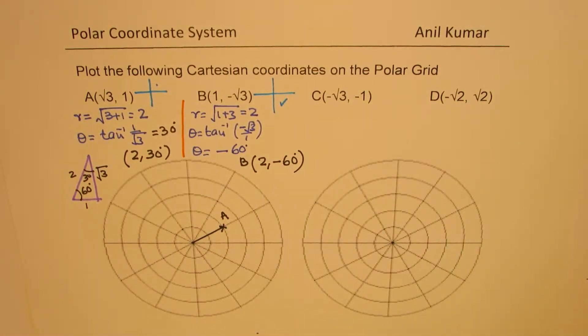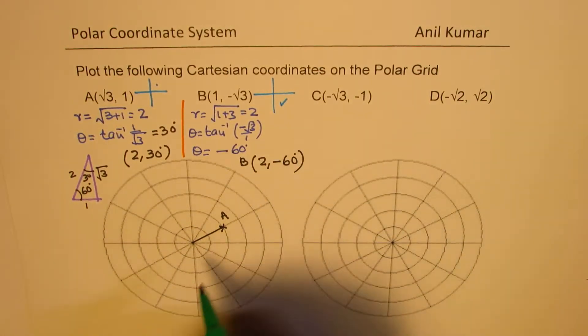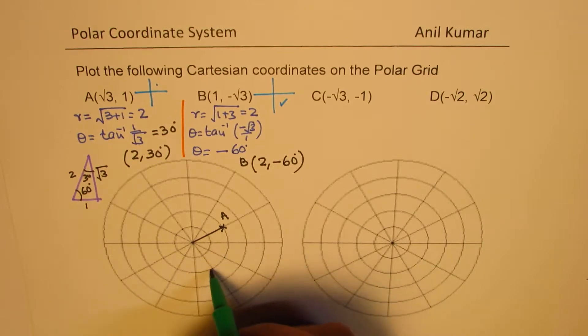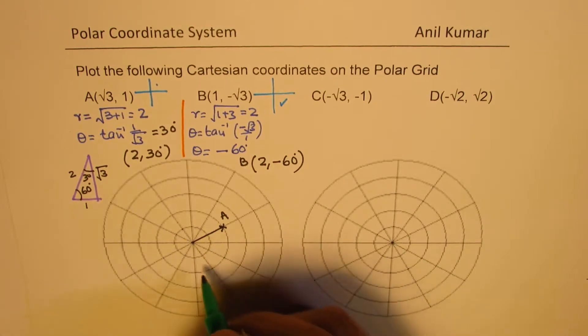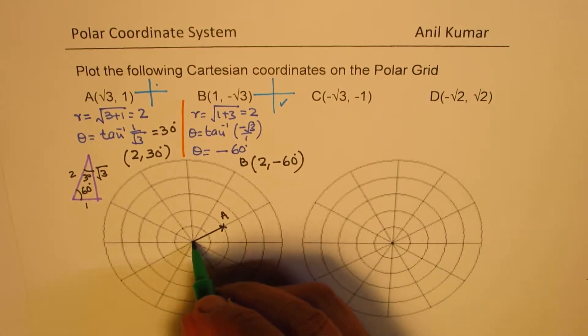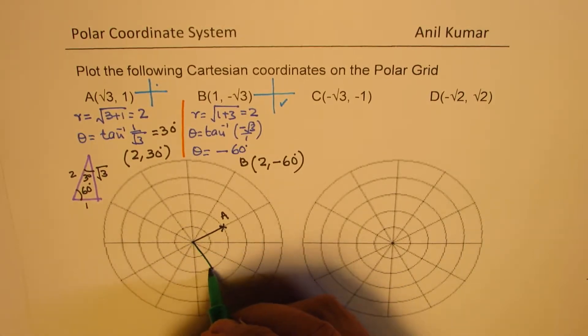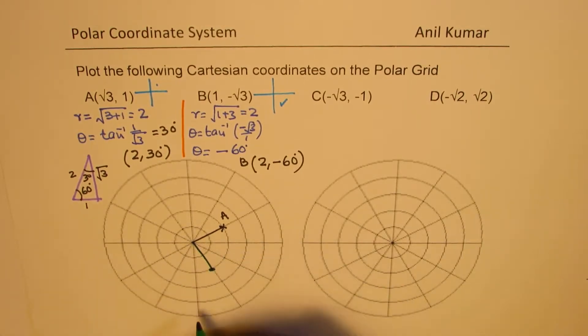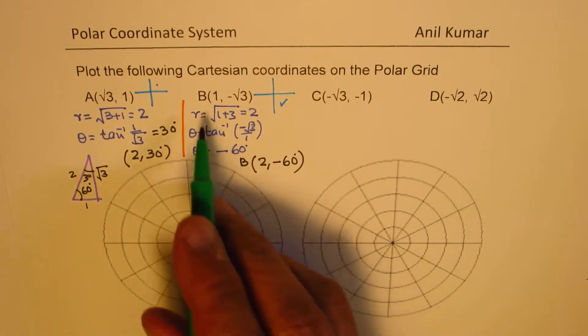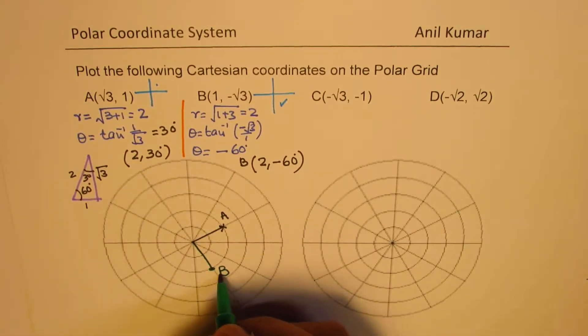So (2, -60°): we go to the 30-degree line, then to 60 degrees in the negative direction. That is the point which is point B for us.